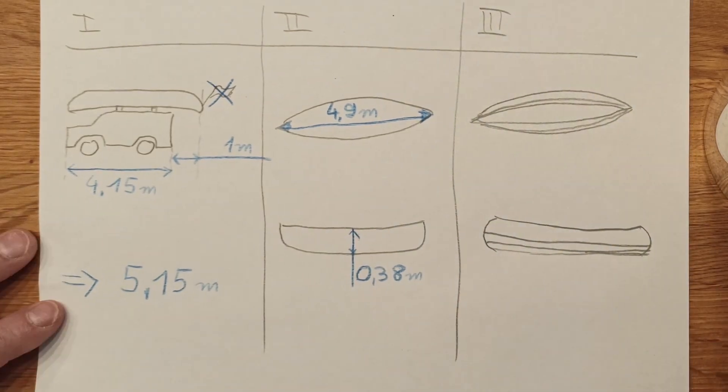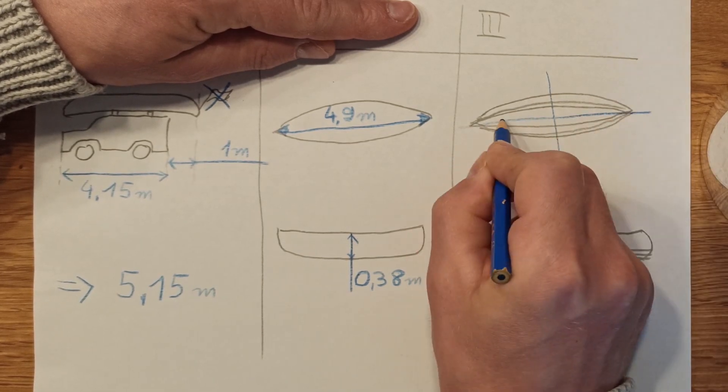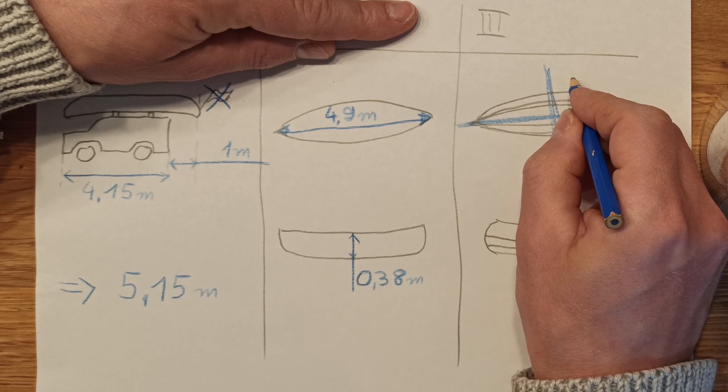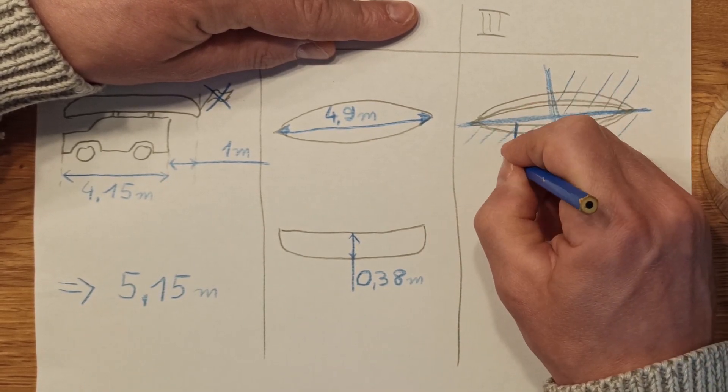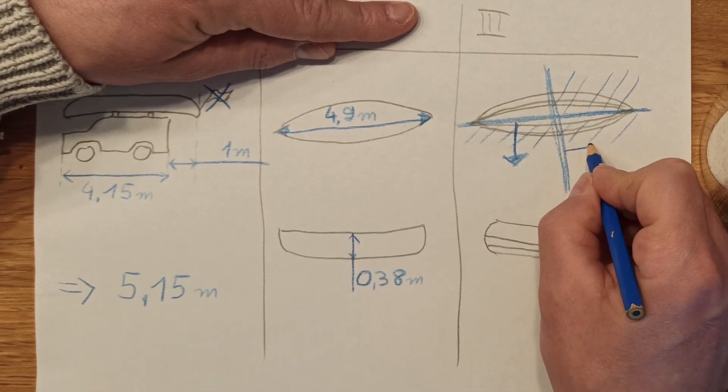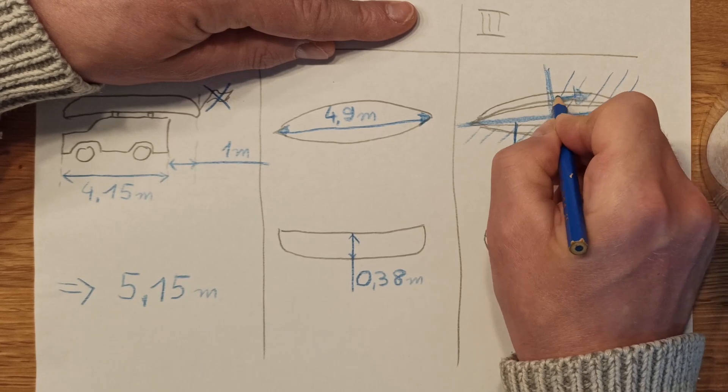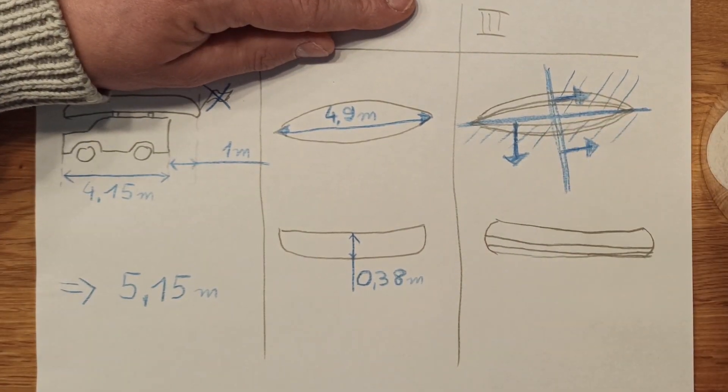Then I started making my CAD model. The hull of the canoe is symmetric. It has got two symmetry planes, one here and one here. So I made just one quarter of it and mirrored it afterwards to get the full shape of the canoe.